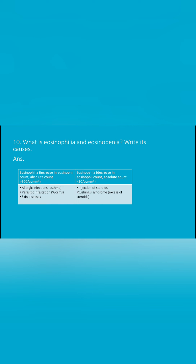Eosinophilia is the increase in the eosinophil count when the absolute count is more than 500 per millimeter cube, and its causes are allergic infection, parasitic infestation, and skin disease. Whereas eosinopenia means a decrease in the eosinophil count when the absolute count is less than 50 per millimeter cube, and its causes are injection of steroids and Cushing syndrome, where excessive glucocorticoids are secreted.